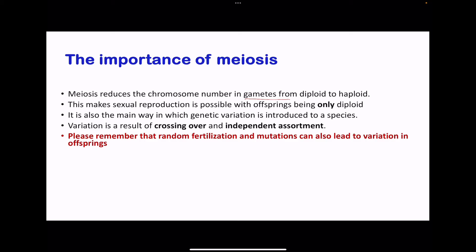This ensures that the number of chromosomes in offspring is maintained at 46 in humans. Meiosis is the main way variation is introduced in species, because of crossing over and independent assortment. Remember that random fertilization also leads to variation, and mutations that occur during the two stages of meiosis can also lead to variation. So variation occurs due to crossing over, independent assortment, random fertilization, and mutations.